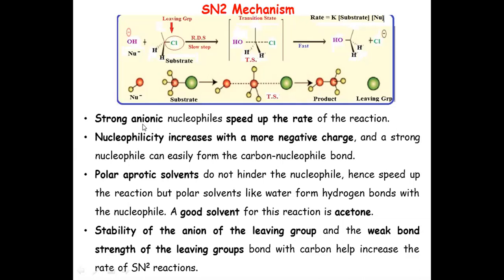It is observed that strong anionic nucleophiles speed up the rate of reaction. The nucleophilicity of the incoming nucleophile will be more if it has more negative charge, which enhances the rate of reaction. It is also observed that polar aprotic solvents like acetone favor this reaction and enhance its rate, whereas polar protic solvents like water reduce the rate. Polar protic solvents are good for SN1 whereas polar aprotic solvents are good for SN2 type of reactions.